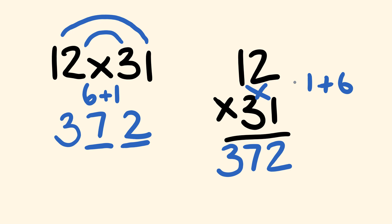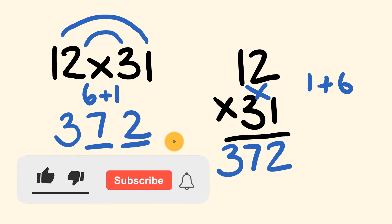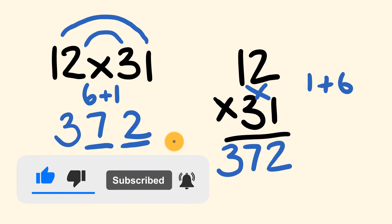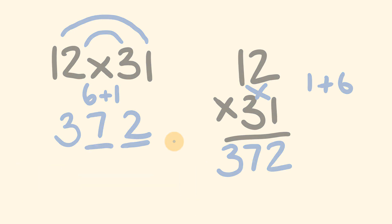So which method do you like better — rainbow multiplication or cross multiplication? They give the same answer, but which would you prefer doing? Let me know in the comments. I'm also going to show some harder questions, so you might want to hold your comments until after we look at those.